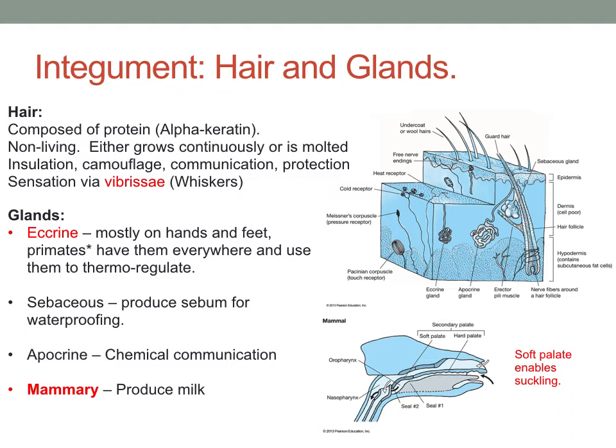The last and maybe most important glands are the mammary glands, where mammals produce milk. This is certainly one of the most defining characteristics of what a mammal is — all mammals have mammary glands.